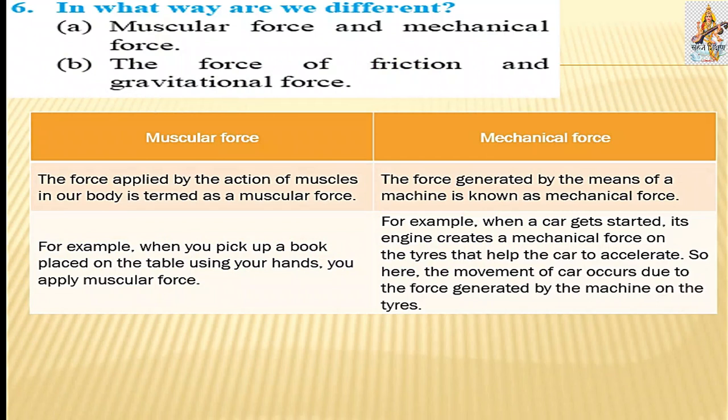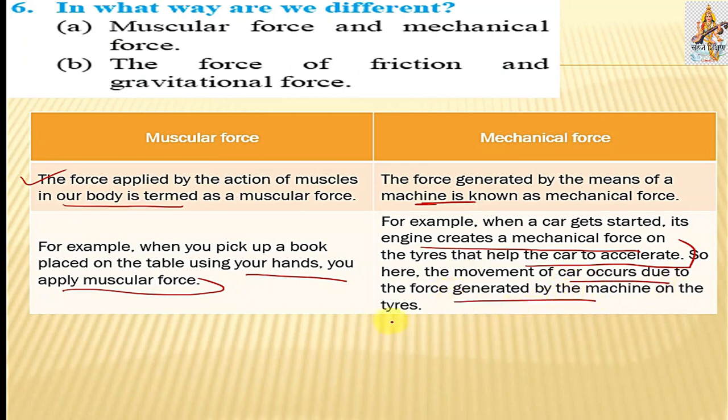Question 6. In what way are we different? Give the distinguish between two forces. Muscular force and mechanical force. Muscular force: The force applied by the action of muscles in our body is termed as muscular force. Mechanical force: The force generated by means of the machine is known as mechanical force. Example of muscular force: when you pick up the book placed on the table using your hands. Mechanical force: When car gets started, its engine creates a mechanical force on tires that help cars to accelerate. The movement of car occurs due to the force generated by machine on tires.